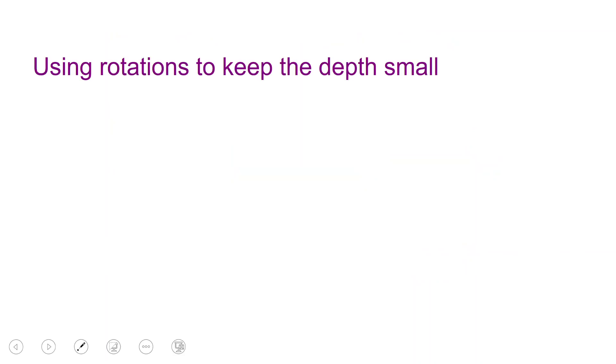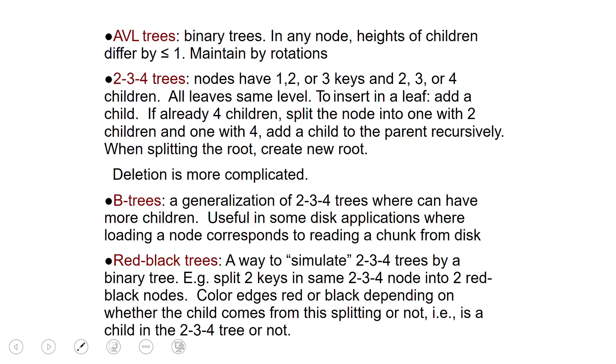As we mentioned earlier, rotations are used by more complicated operations to keep the depth of the tree small. And there is really an industry of structures which use rotations to maintain depth smaller. There is AVL trees. These are binary trees in which the heights of each of the children differ by at most one. So it's very strictly balanced and this strictness makes the balance a little tedious.